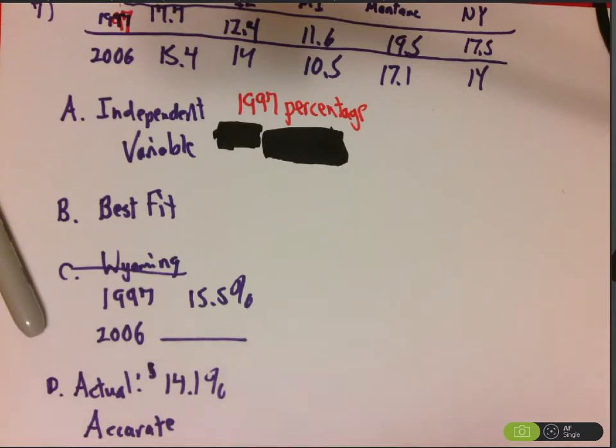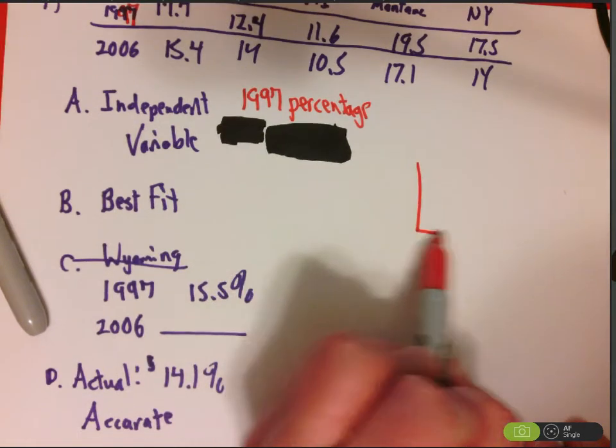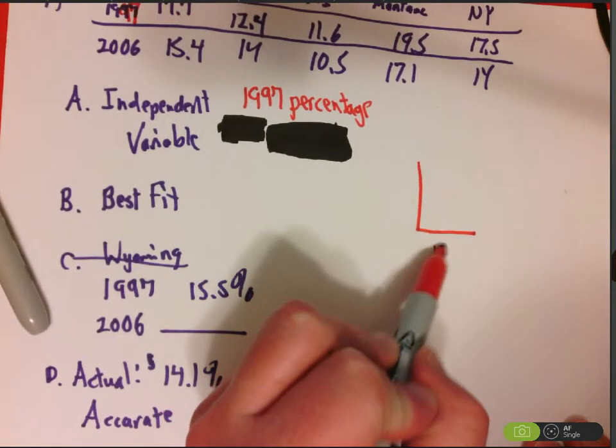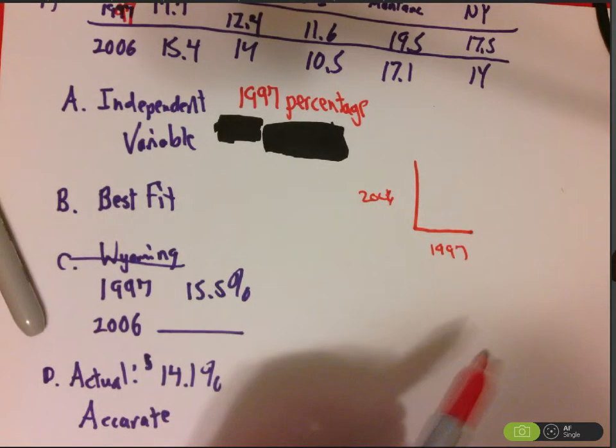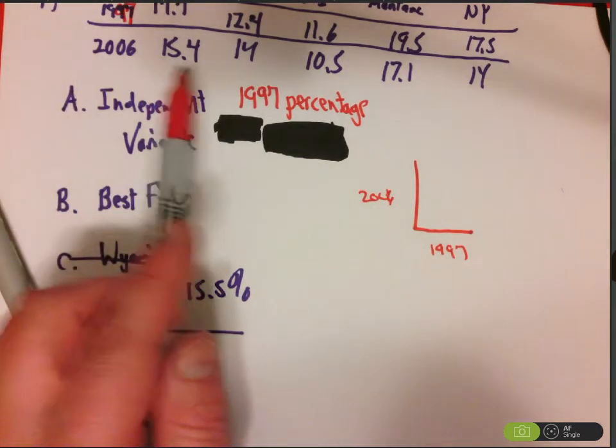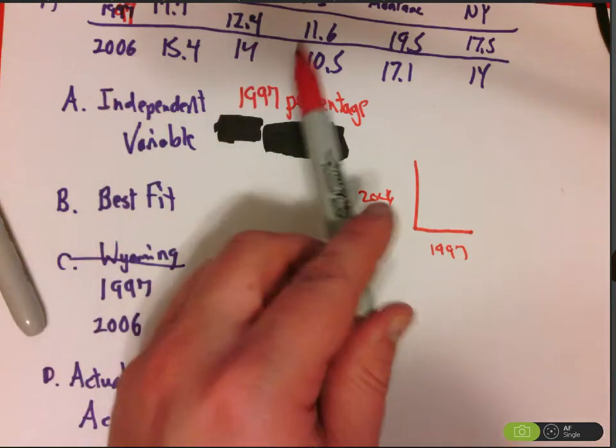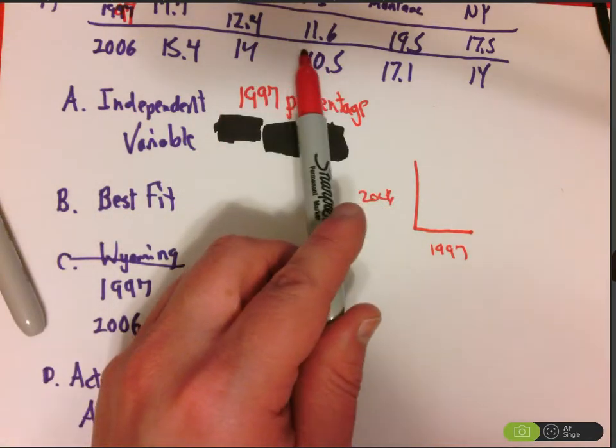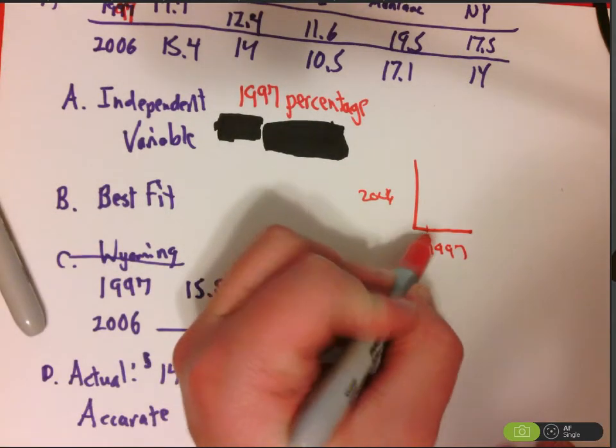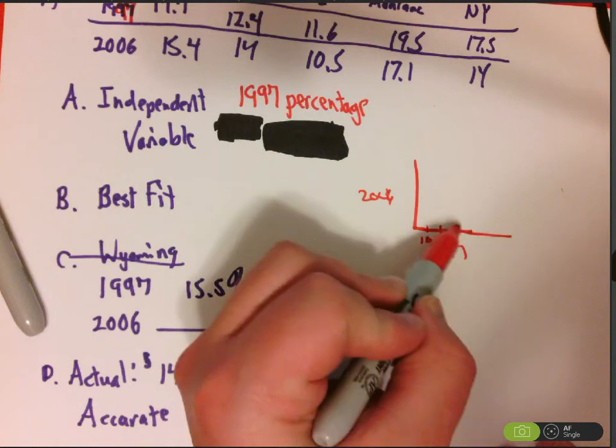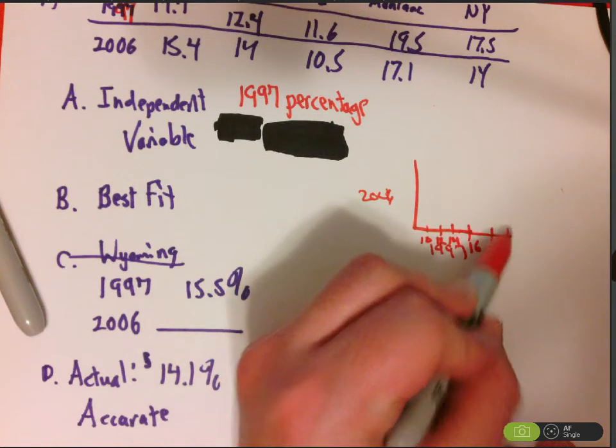Now, the next thing wants me to make a scatterplot, so the best fit in scatterplot section. So I'm going to come out here and make a scatterplot. My 1997 data is going to go on the bottom, and my 2006 data is going to go on top. 1997 data moves somewhere between around 10 or so, and then all the way up to about 17. So I'm going to do 10, 12, 14, 16, 18, and 20.